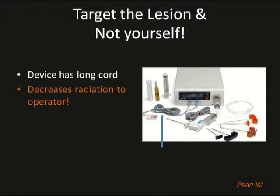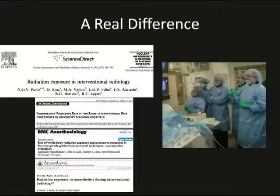Pearl number two is to decrease the radiation to yourself. I wear lead glasses, masks, and gowns for protection. If you do enough cases, you don't want to damage your hands, and most importantly the lens of your eye, because that has a threshold dose for cataracts. Staying out of radiation is very important besides using lead shields. There are multiple articles in the literature saying radiation safety is not just for other people — it's for you as well. With controlled cement delivery and a longer cord, you can stand back 6 or 10 feet from the image intensifier, which is quite nice.